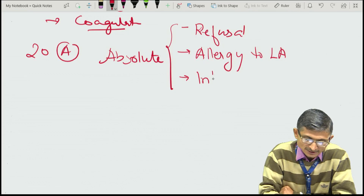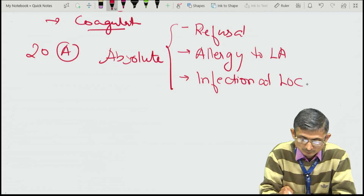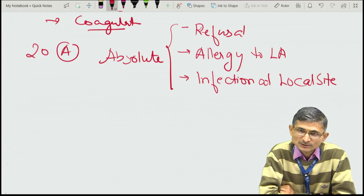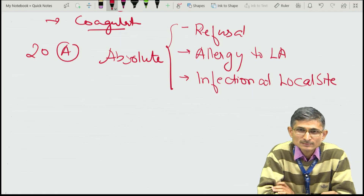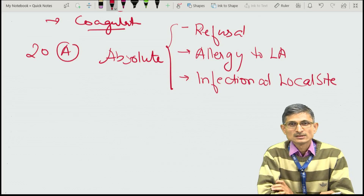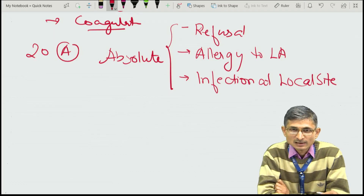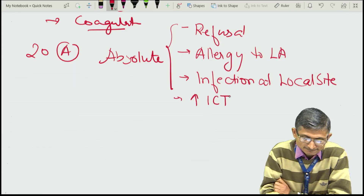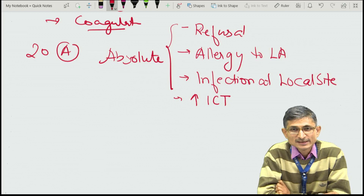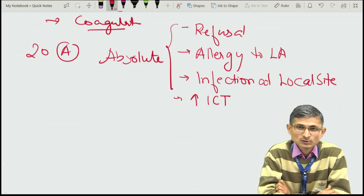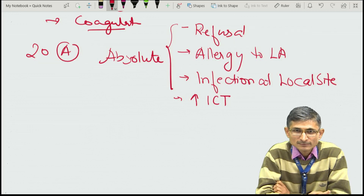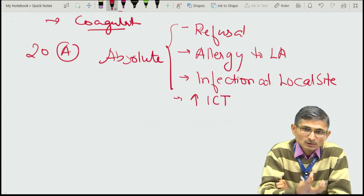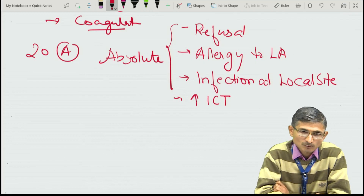If there is an infection at the local site, we will avoid central neuraxial block, because we may introduce the superficial infection into the central nervous system and the patient may have life-threatening complications. If the patient has increased intracranial pressure (ICP), we should also not give central neuraxial block, as puncture can cause coning of the medulla and life-threatening complications.